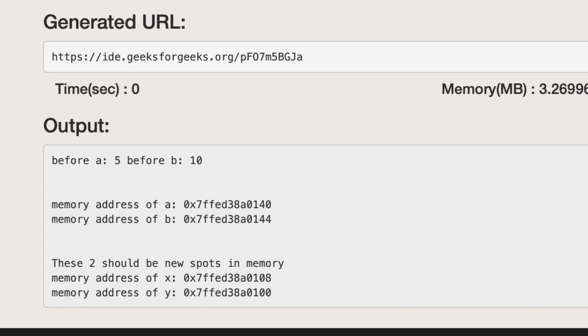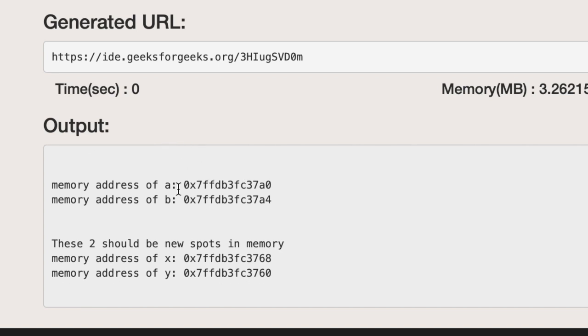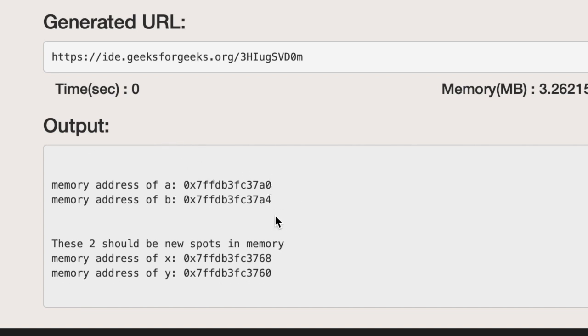Okay so when the output comes we have a is equal to 5 and b is equal to 10 originally. Then we have the memory address of a and b, 0 and 4 is what's making them different right now.